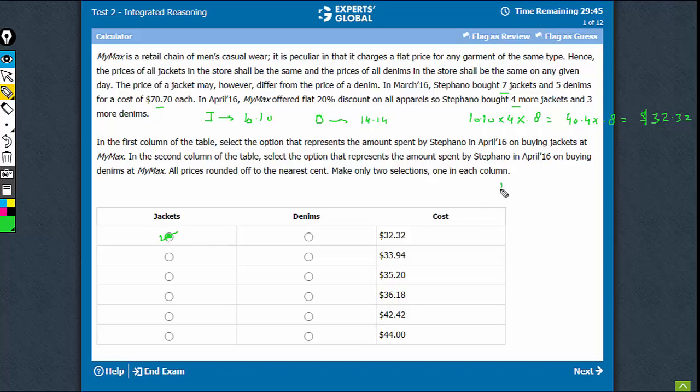And coming to denims, $14.14. 3 were bought times 0.8 because there was a 20% discount. That's $42.42 times 0.8. That's approximately $34, $33.34. That's the option. So for denims, $33.94.